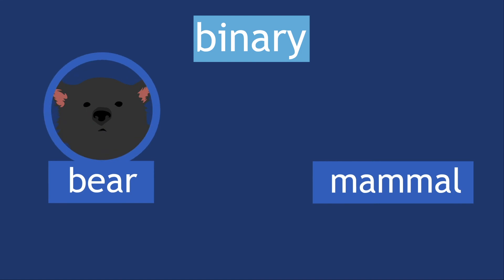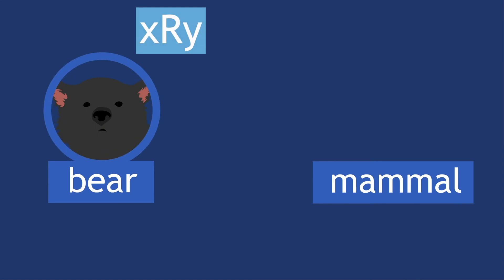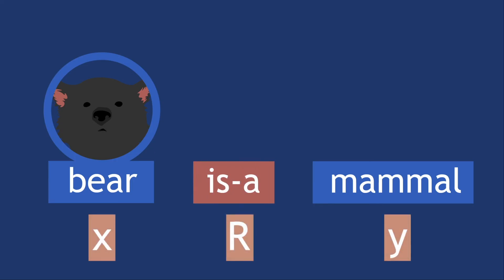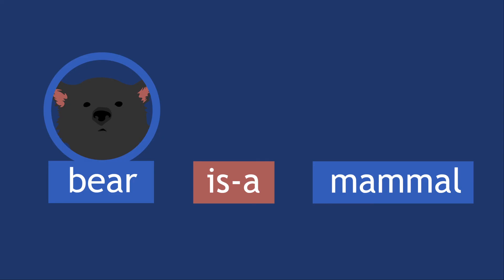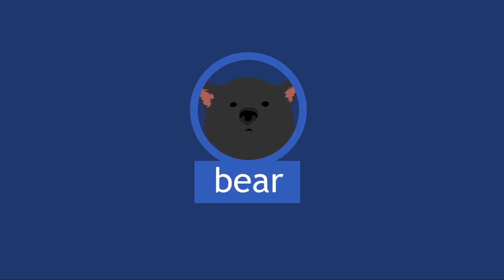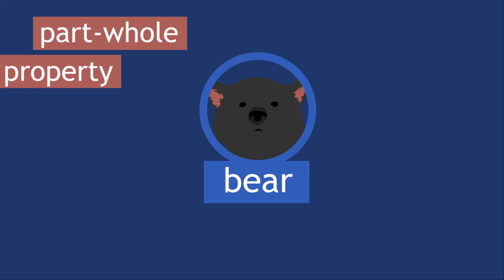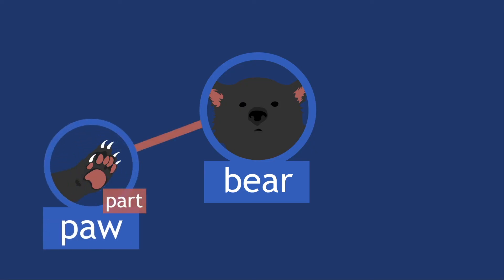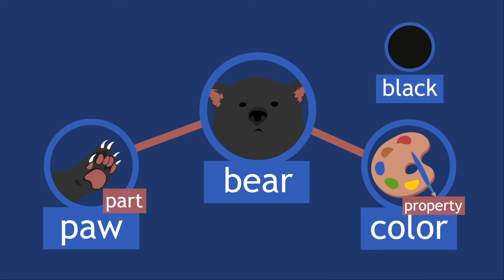Ontologies include additional types of relationships that are usually binary. They describe a relationship between exactly two concepts or entities. These relationships are commonly written as either (x, r, y) or in predicate form. In the first, x and y are entities, and r is a relationship — for example, bear is-a mammal. In the second, we write it as is-a(bear, mammal). This form is consistent with first-order logic representations used in the programming language Prolog. Other binary relations commonly used in ontologies are part-whole, property, and value — for example, paw part-of bear, color property-of bear, and black value-of color.